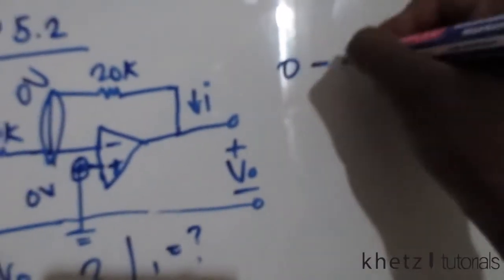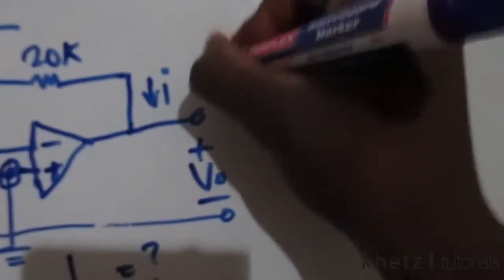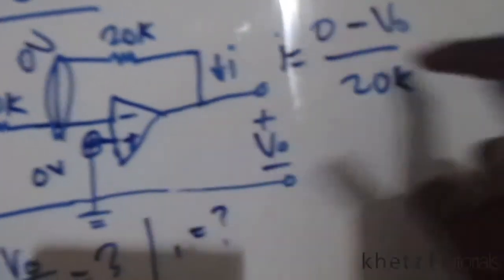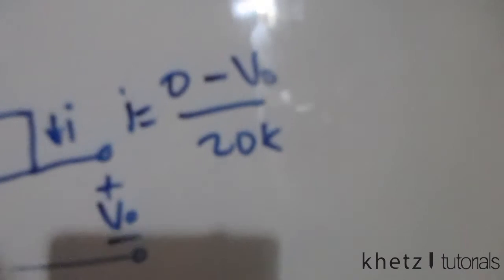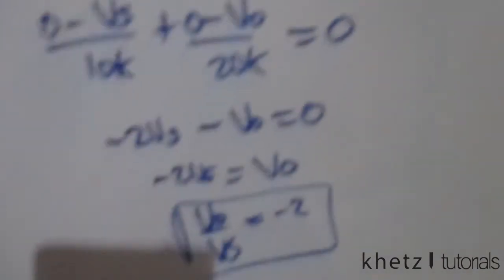So i is equal to zero subtract Vo divided by 20k. So this is what we have, but we still have to find the value of Vo.